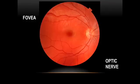This is the view your eye doctor has through a dilated pupil, and I've labeled two important landmarks. The fovea is the center of the macula, and it's responsible for color vision and reading vision.